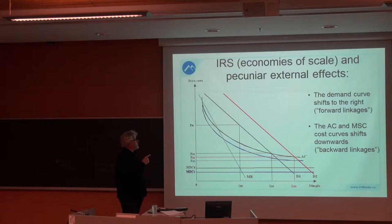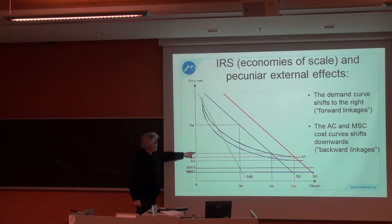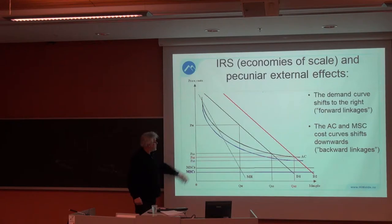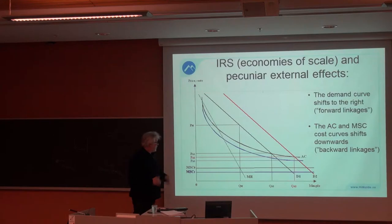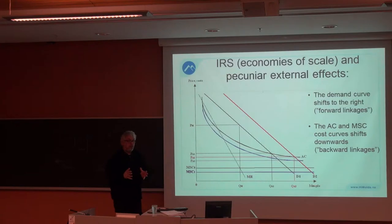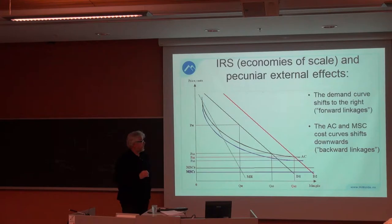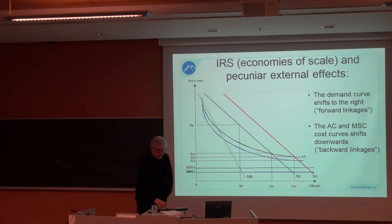So you get the point here that there is a demand effect and there is a cost effect. Both of them contribute to the pecuniary external effects, which we actually measure here, because this will be the price changes in the market for all players. And this shift is just a marginal cost shift, because it is assumed that it will be cheaper to produce each unit as a result of this increased competition.